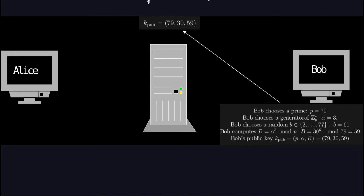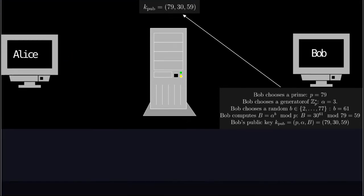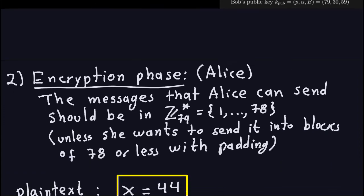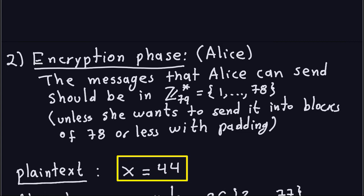Now let's suppose Alice wants to send a message to Bob. This will be the encryption phase, done by Alice. One important thing is that the message Alice can send has to be a number between 1 and 78, because it has to be an element of the group Z79*. If the message is longer — say, a number like 150 — you would encrypt in blocks of 78 or less, and use padding in some cases.